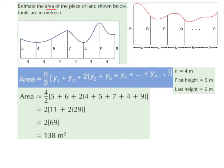So we're going to use our trapezoidal rule from our formula book, which says that area equals h over 2, times y1 plus yn plus 2 times y2 plus y3 plus y4 plus dot dot dot plus yn minus 1.